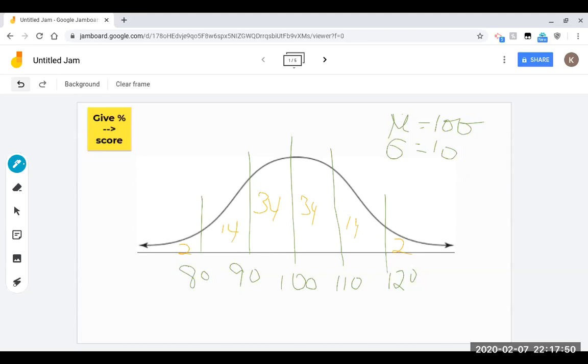This whole distribution is worth 100, so you can subtract two and subtract two, and that's going to give you this middle. Or you could add each of these pieces together. And so what we've done here is we've identified the middle 96%. It goes from 80 to 120.